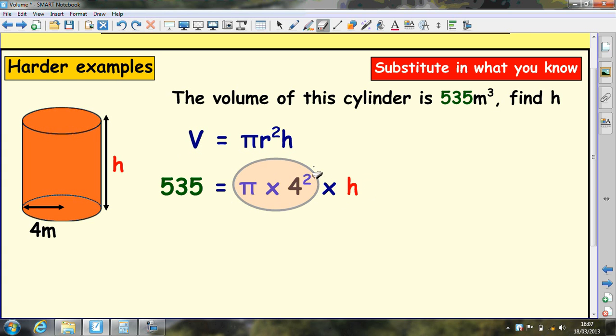Now the trick to this kind of calculation is to do this bit first. Do this calculation in your calculator. Type in 3.14 times 4 squared or pi times 4 squared. Write the 535 down again, write the times h down again. Work this bit out, and it comes to 50.24.